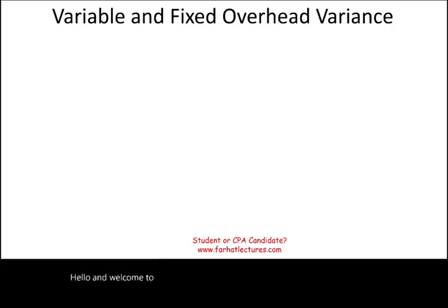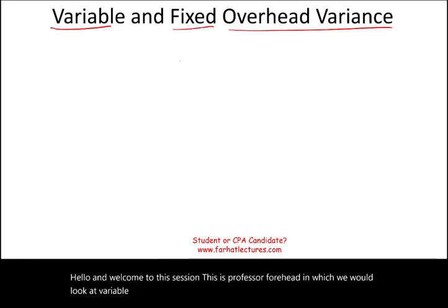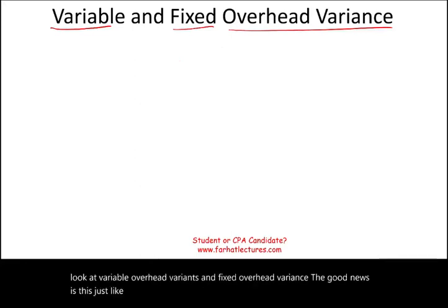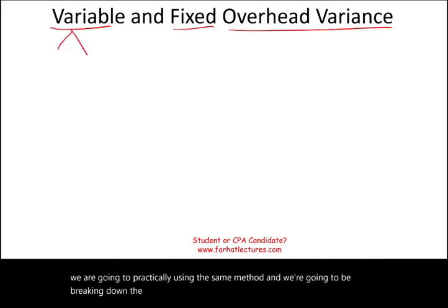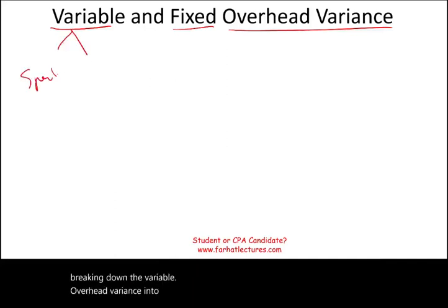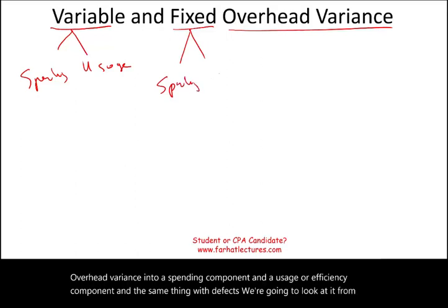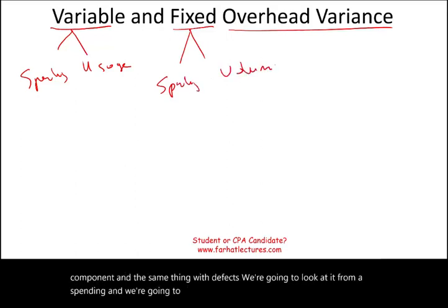Hello and welcome to this session. This is Professor Farhad, in which we would look at variable overhead variance and fixed overhead variance. The good news is this: just like when we looked at direct labor variance and direct material variance, we're going to be using practically the same method. We're going to be breaking down the variable overhead variance into a spending component and a usage or efficiency component. And the same thing with the fixed — we're going to look at it from a spending and a volume component. So the concept is the same.